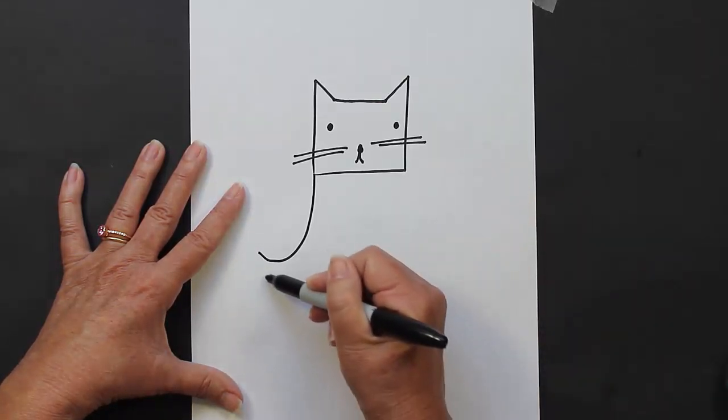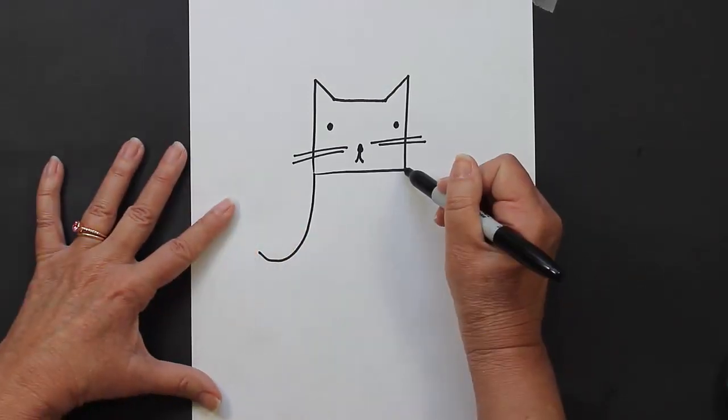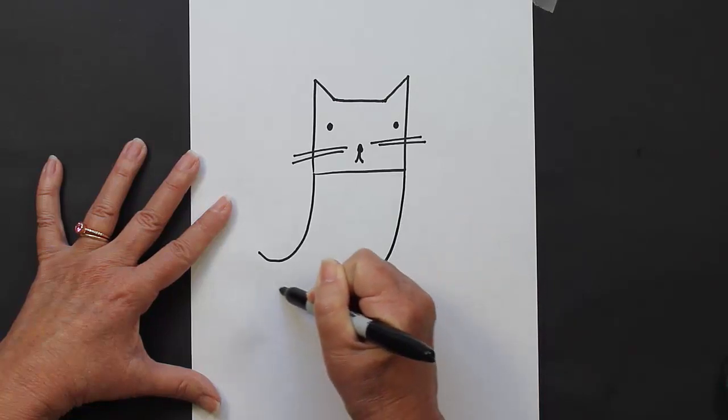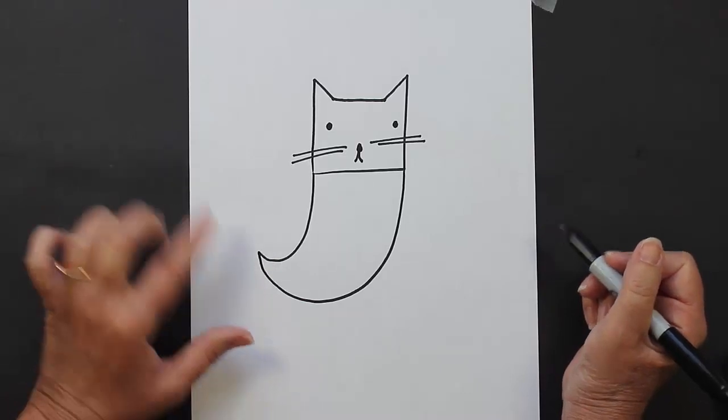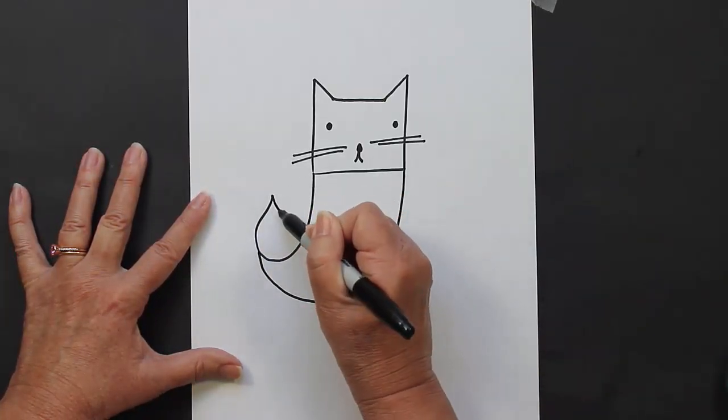And then once we get close to this initial curved line, we're going to touch - let me show you what I mean. So we come out, come down, we come back in and we touch. Now we're going to make the tail part of our mermaid, so we come out with a curved line and come back in.